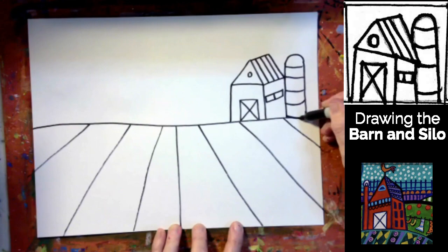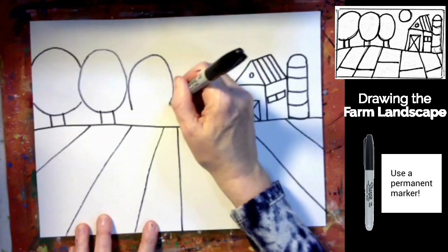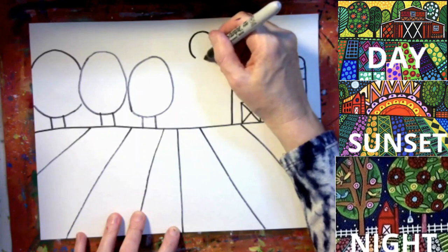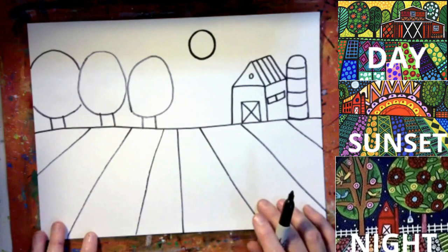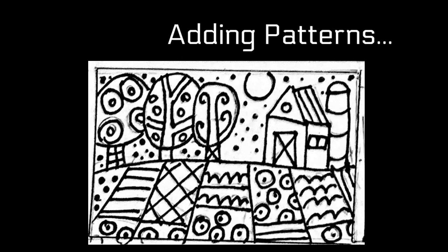Notice how my lines are a little bit curved. Now I'm adding some circle shapes — these are the tops of the trees, and there are the trunks of the trees. Some of my trees are overlapping. This is the moon; it's going to be a nighttime scene. Are you drawing a nighttime scene or a daytime scene? I'm dividing the sections of field into more sections.